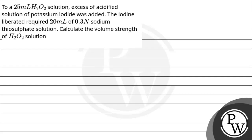Let's read the question. To a 25 ml H₂O₂ solution, excess of acidified solution of potassium iodide was added. The iodine liberated required 20 ml of 0.3 normal sodium thiosulfate solution. Calculate the volume strength of hydrogen peroxide solution.